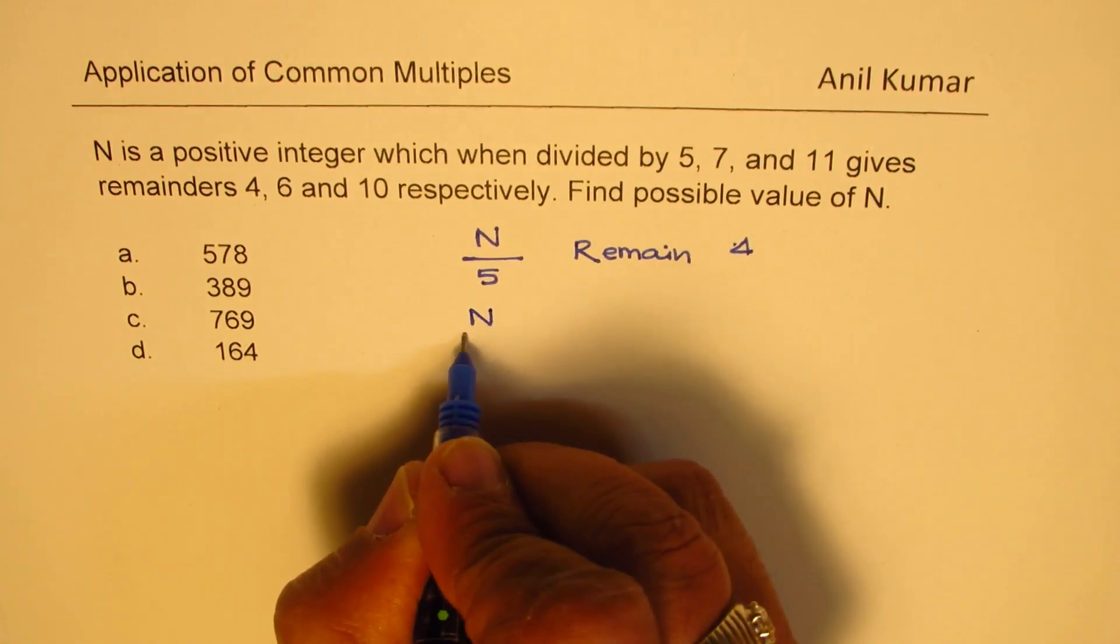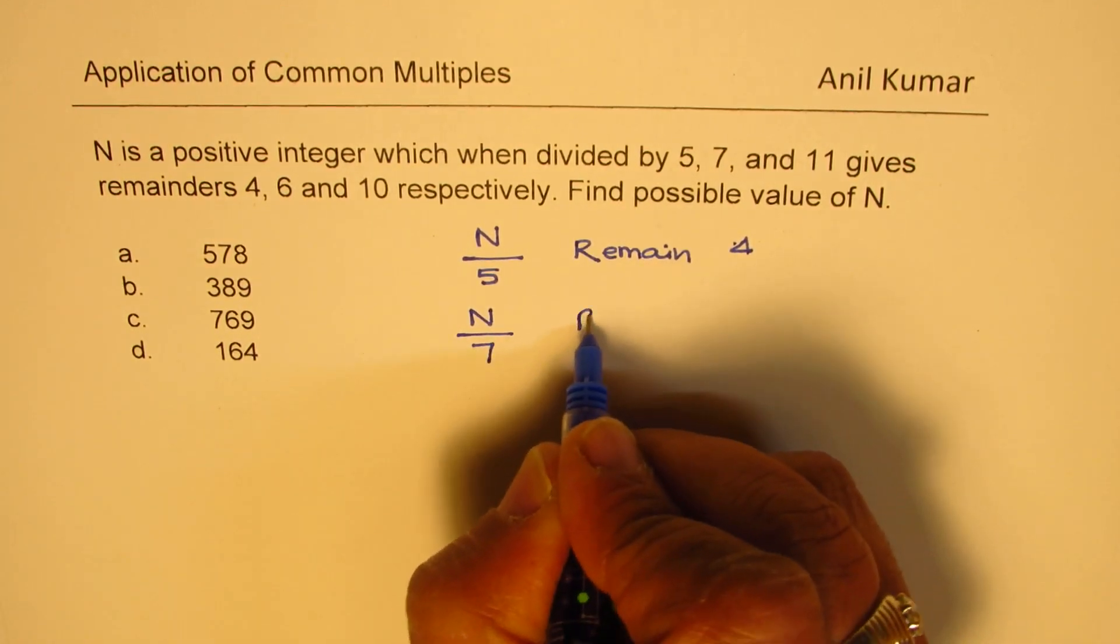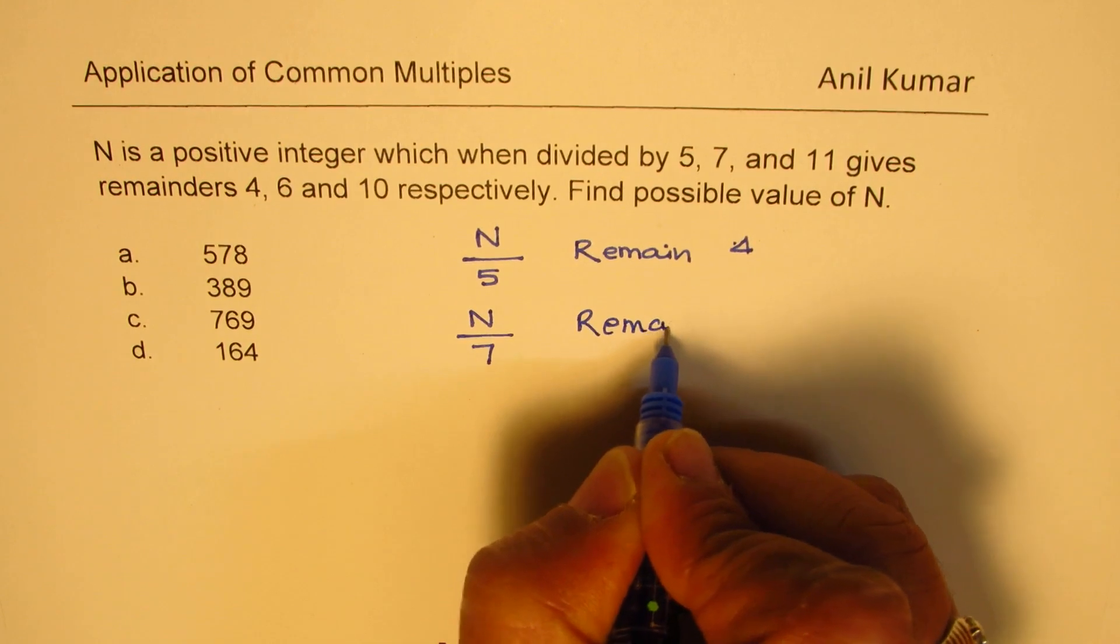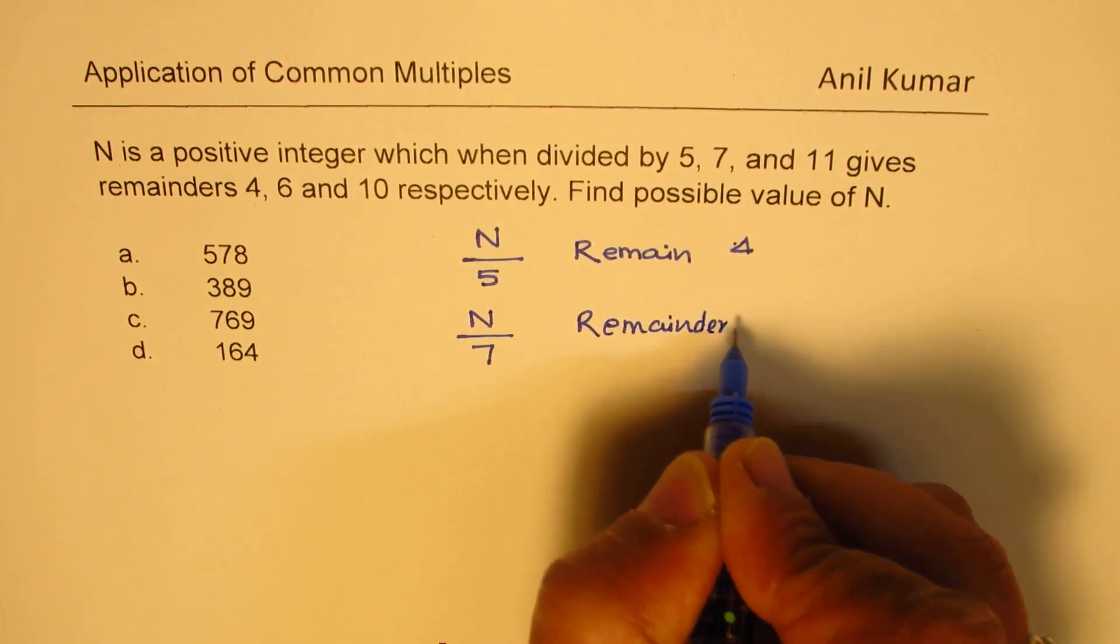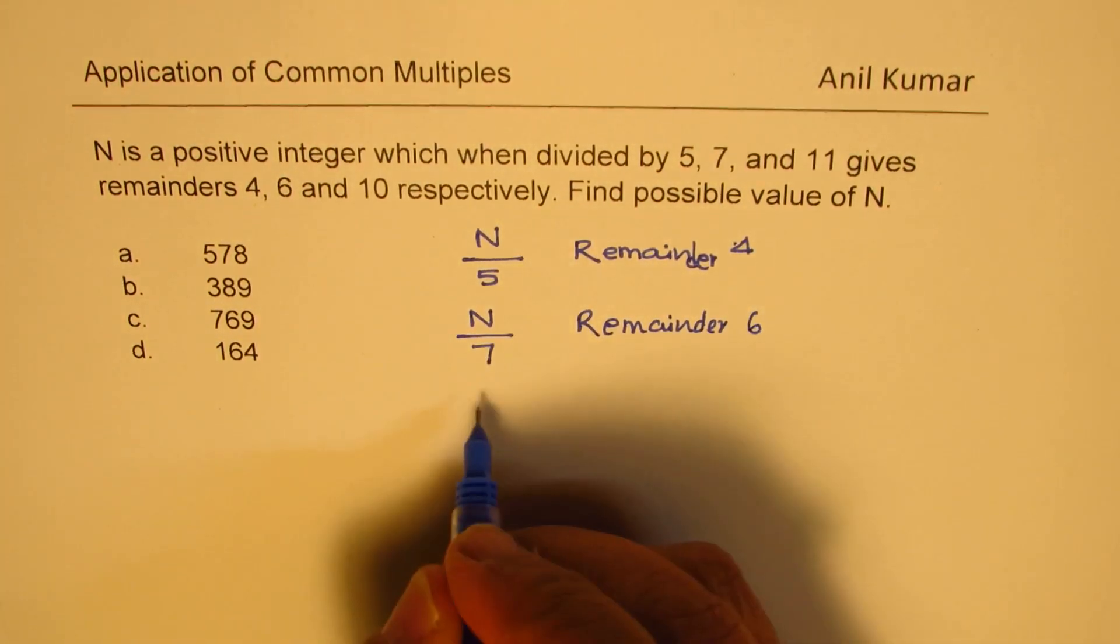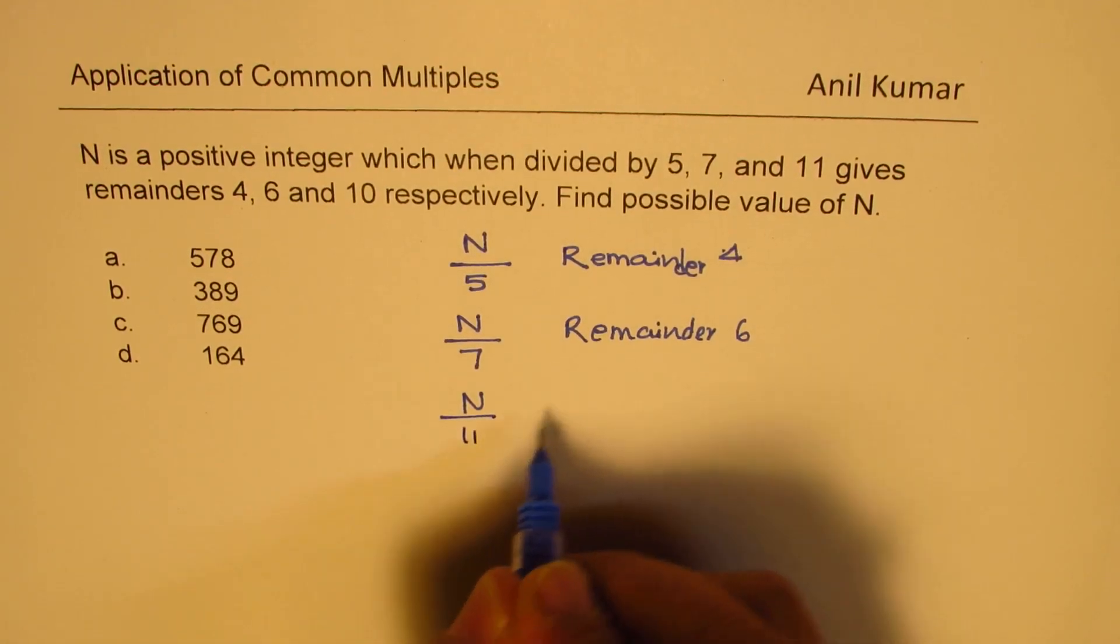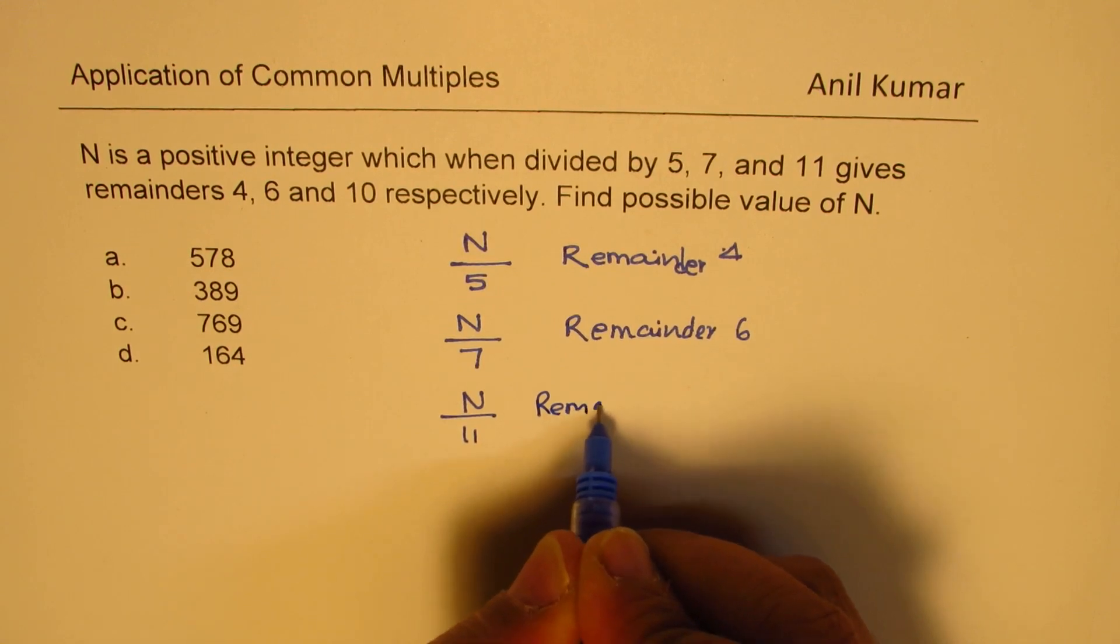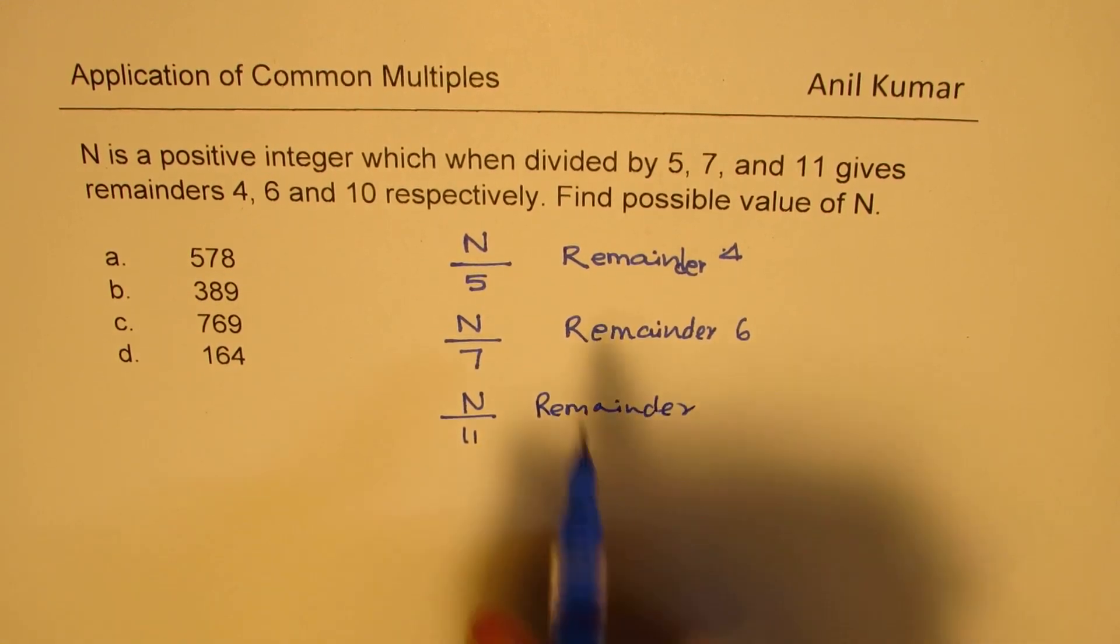When I divide N by 7, the remainder what remains is 6. And when N is divided by 11, the remainder is given to you as 10.